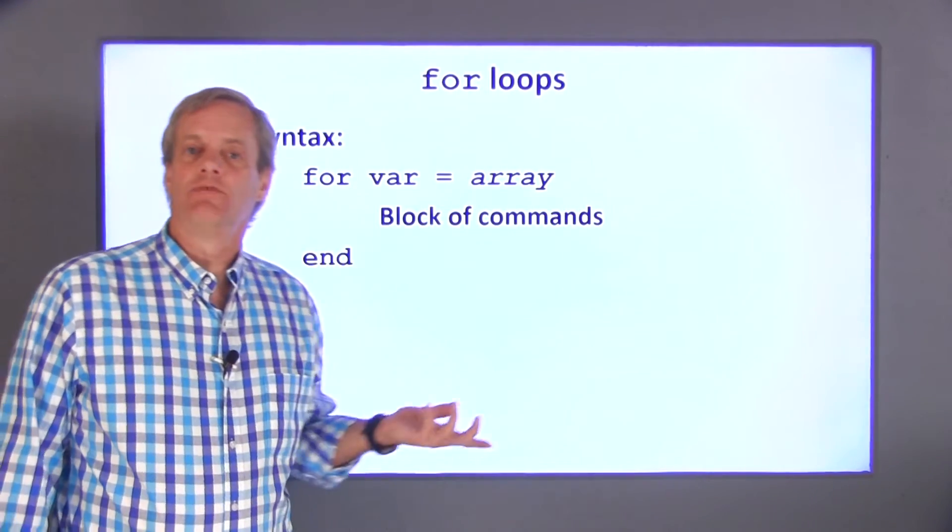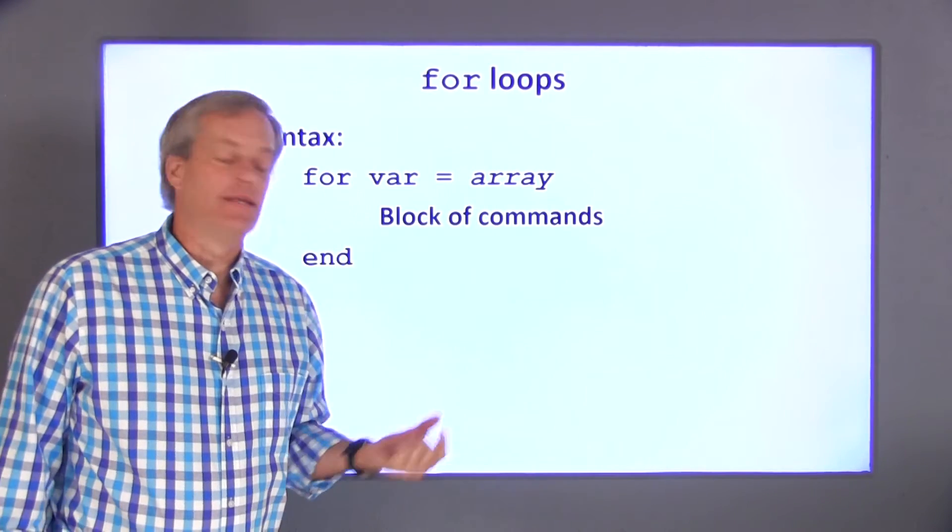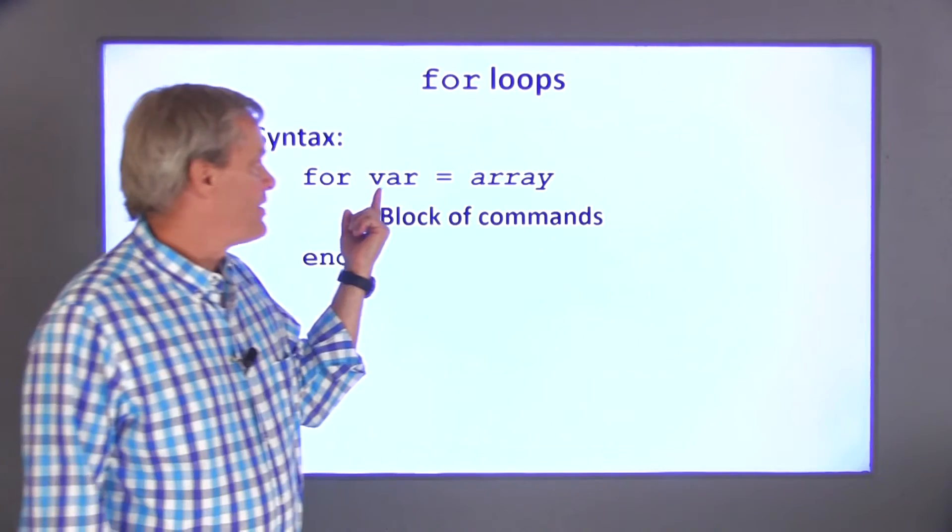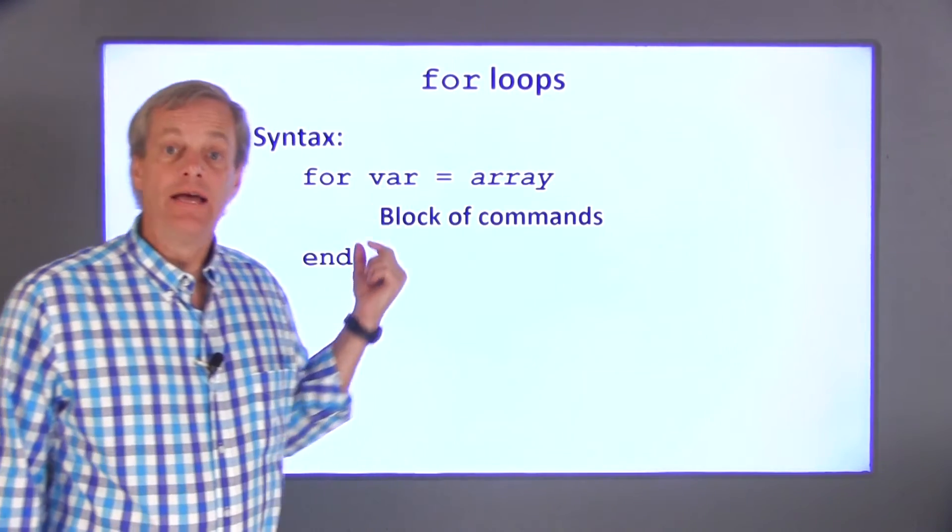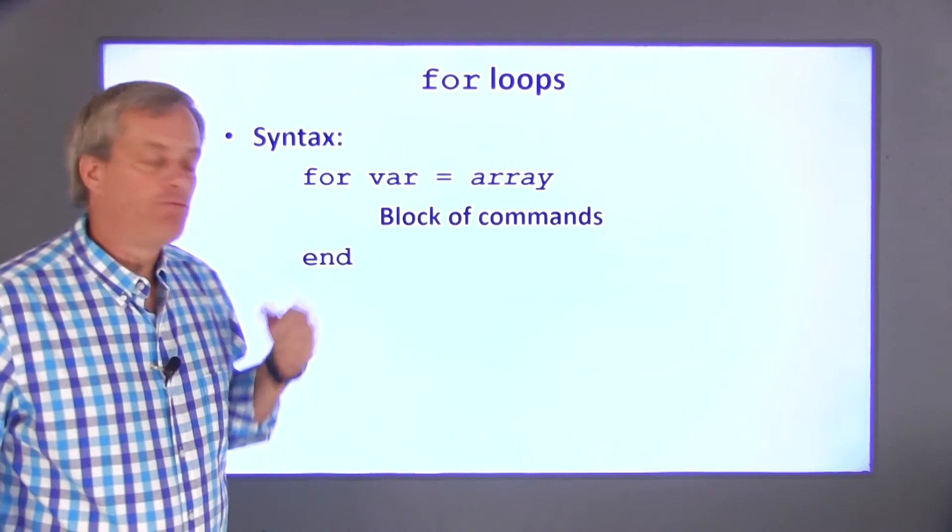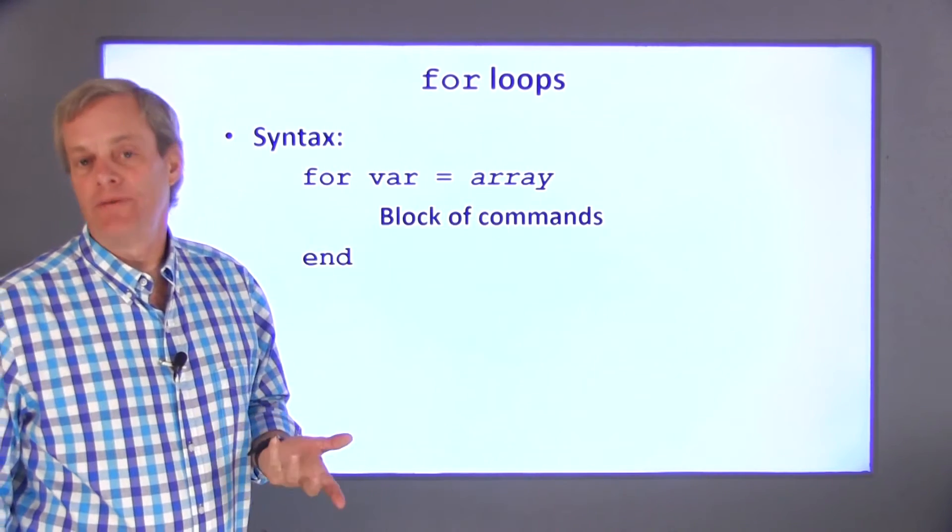This is the general syntax of a for loop. The loop starts with the word for and ends with the word end. The for statement provides a variable name, here it's var, an equal sign, and an array. Between the for and end statement is a block of code that gets executed repeatedly.